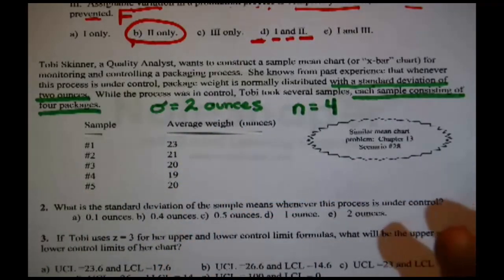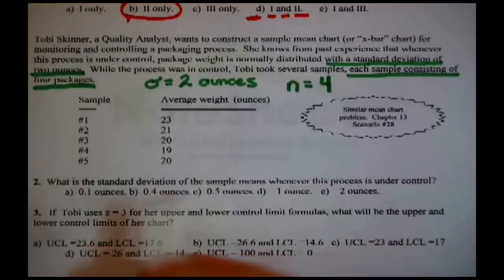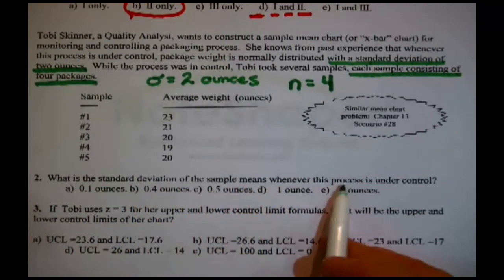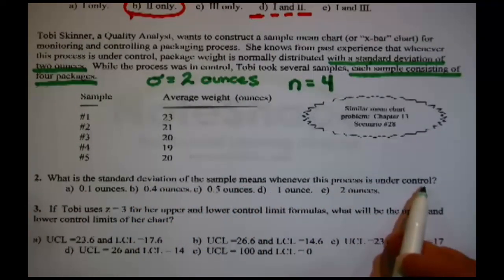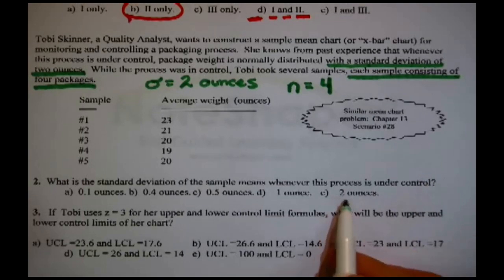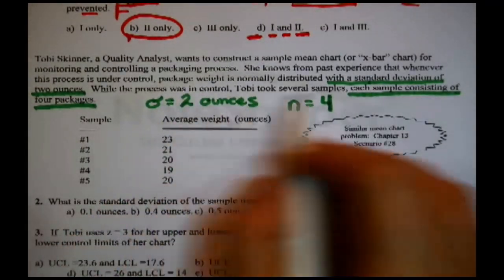While the process was in control, she took several samples, each sample consisting of four packages. Capital N is always sample size equals four. We're going to need that later. I just know it. And then here's the data. Here's five samples and here's how much they weighed. What are the questions?